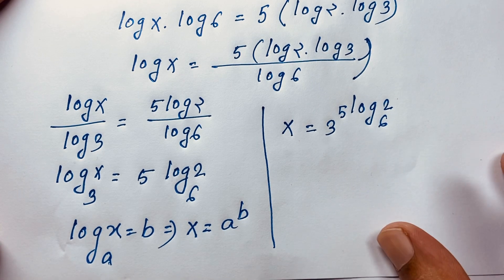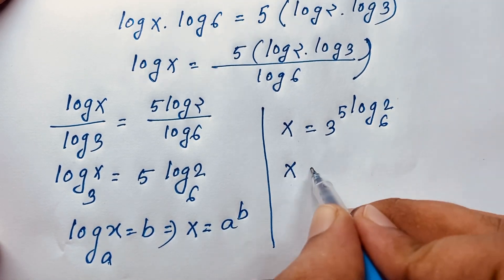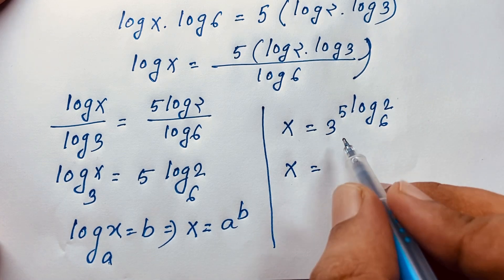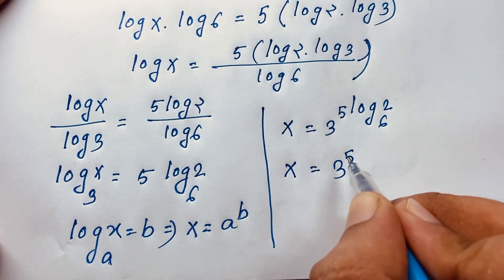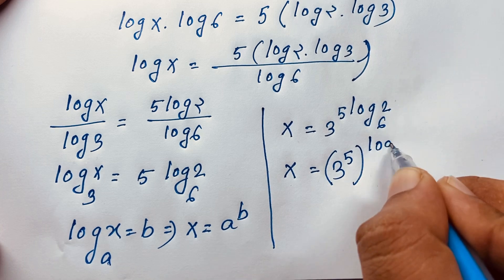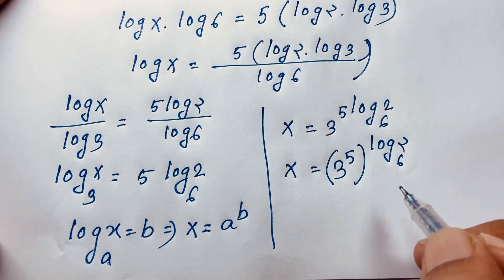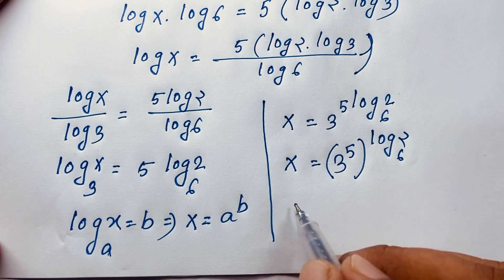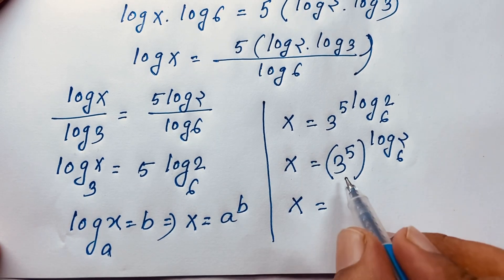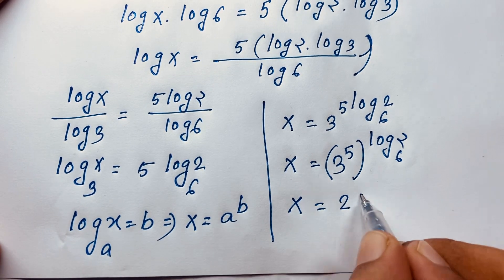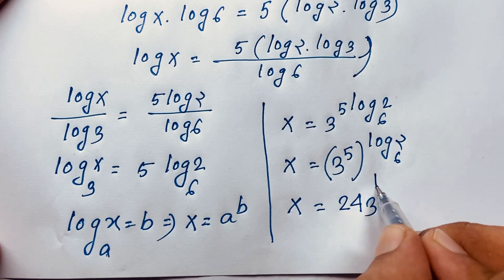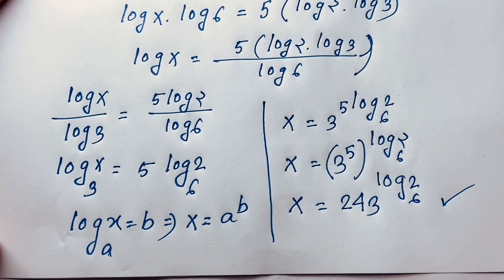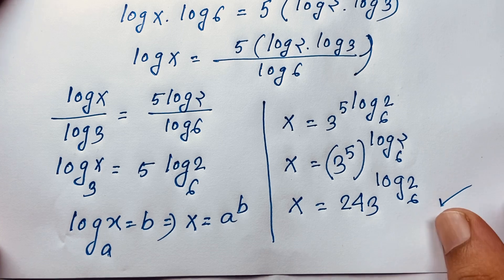We can see that x equals 3 to the power 5, which is 243, raised to the power log 2 base 6. Applying the rule (A^N)^M equals A^(NM), x equals 243 to the power log 2 base 6. This is the value of x in this maths problem.